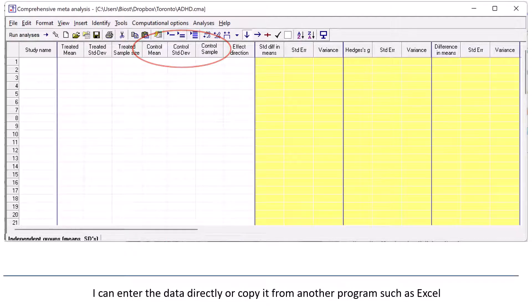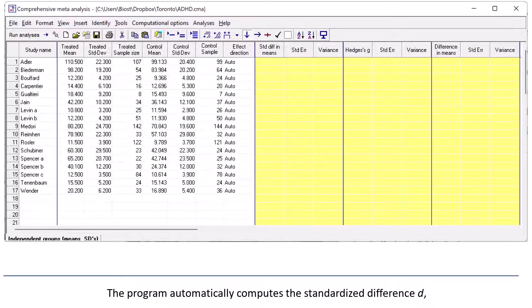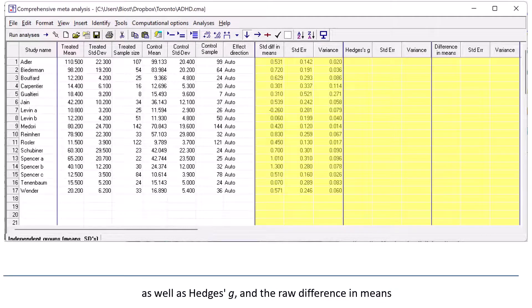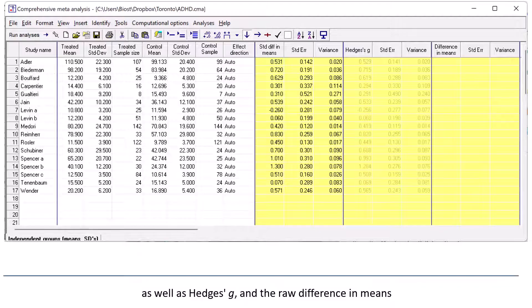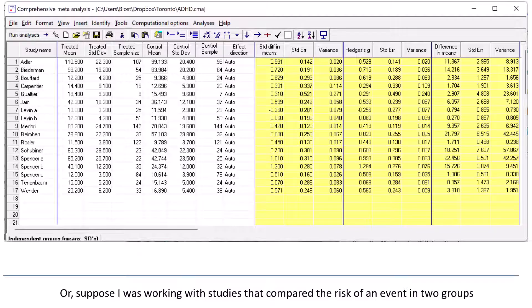I can enter the data directly, or copy it from another program, such as Excel. The program automatically computes the standardized difference d, as well as hedges g, and the raw difference in means.